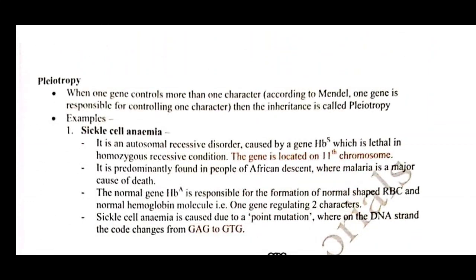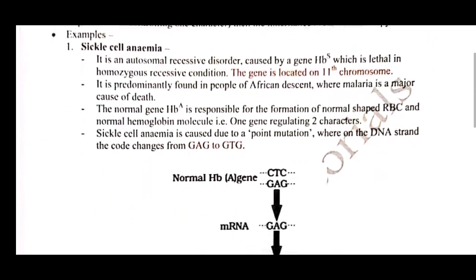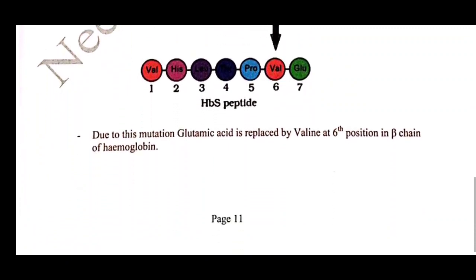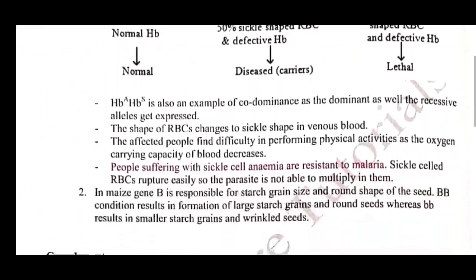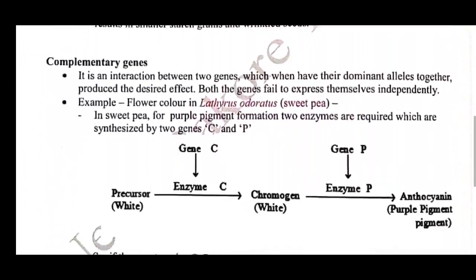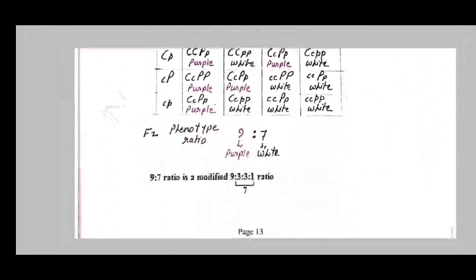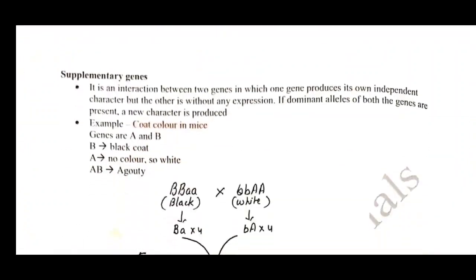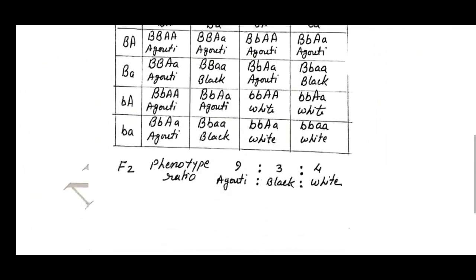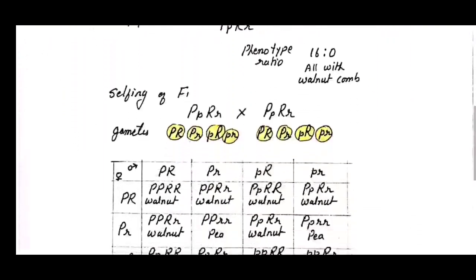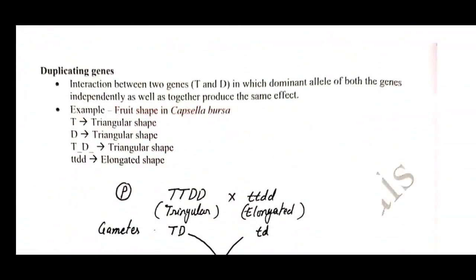Pleiotropy is given next, with sickle cell anemia as the example, shown with a colorful diagram of how it occurs. Moving to the next topic, Complementary Genes are discussed with examples like sweet pea — the cross and ratio table are given. After that Supplementary Genes and their crossing case study are given, as well as Collaborator Genes — an extra topic included for comprehensive knowledge.